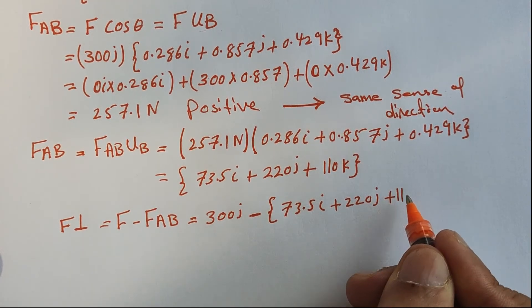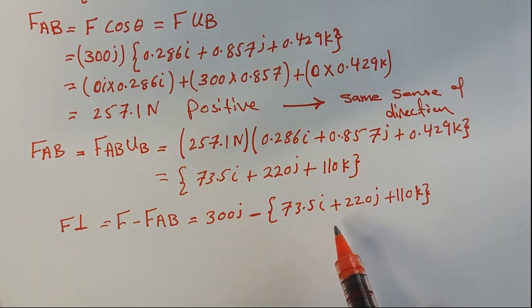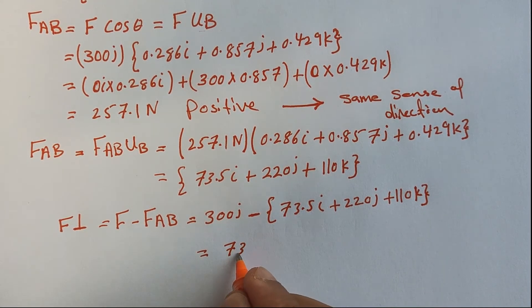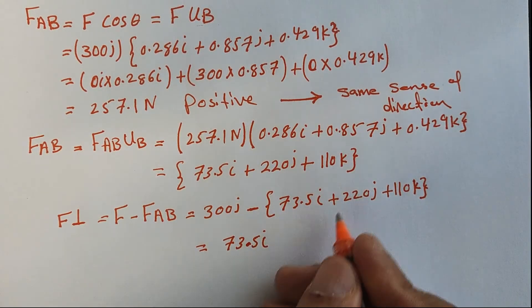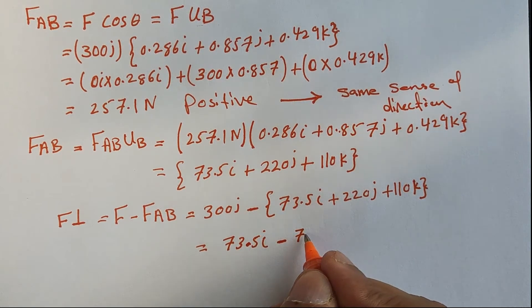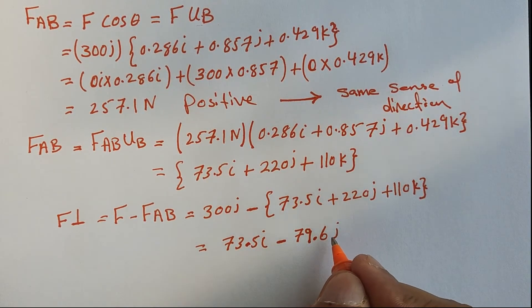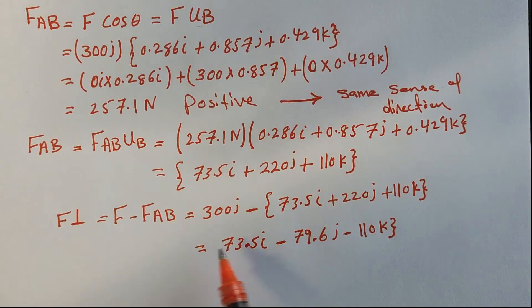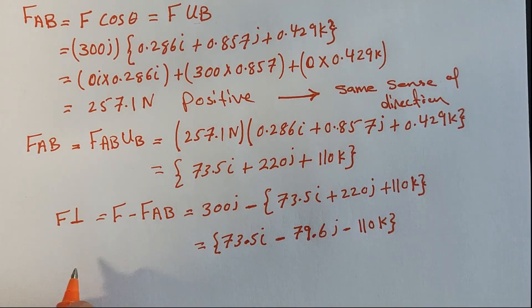Subtracting the components: there's no x-component in F, so we get -73.5i. For J: 300 - 220 = 79.6j. For K: there's no K component in F, so we get -110k. This gives the Cartesian representation of the perpendicular force: -73.5i + 79.6j - 110k.